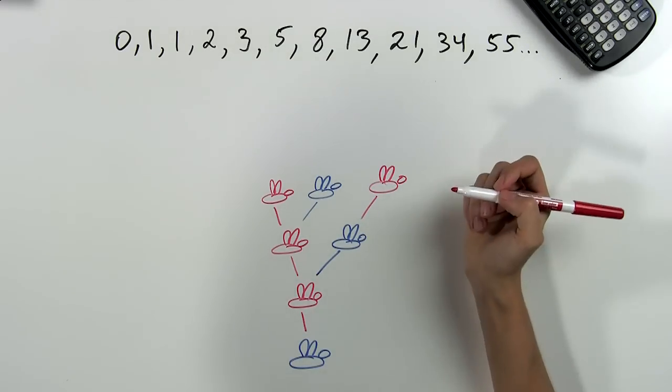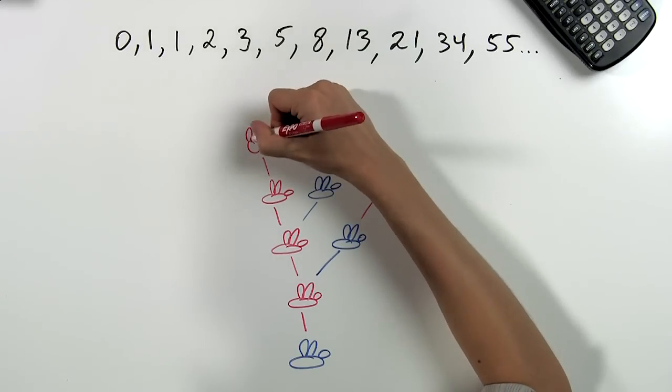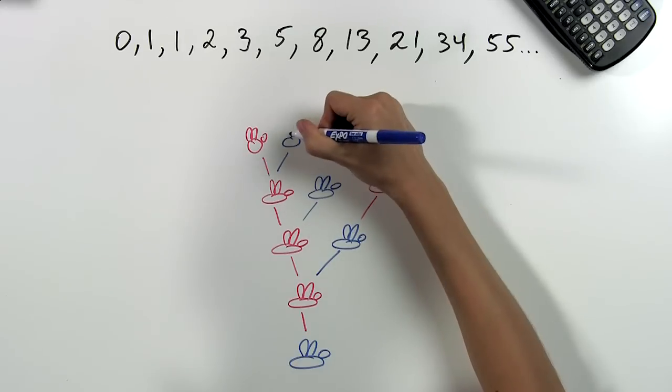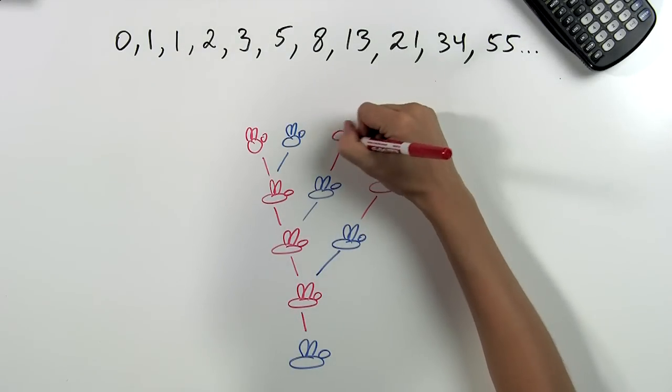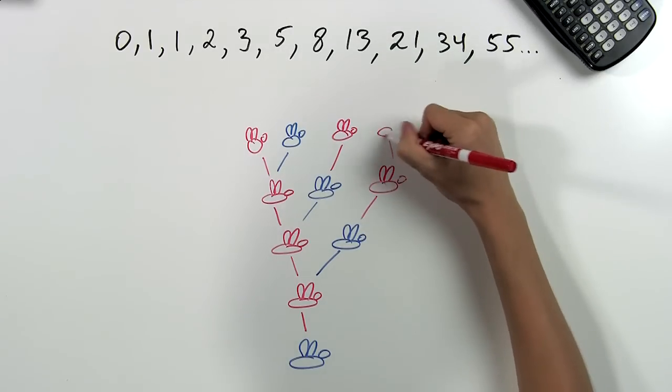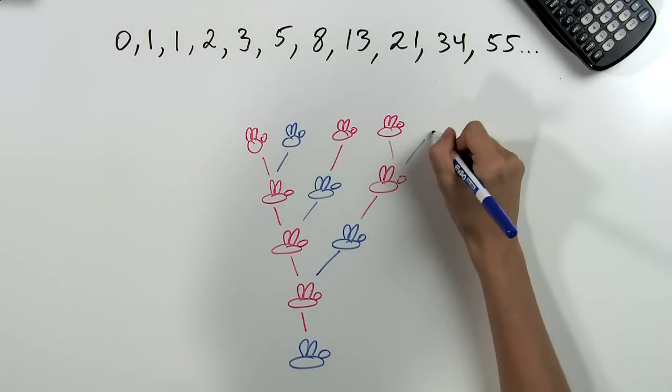Let's do one more row of parents. This female has a female and a male parent. This male only has one female parent. And this female has a female and a male parent.